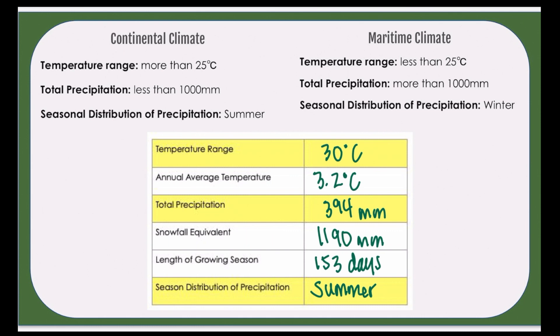We don't know where this location is, so I've put all of our answers on the screen. I've highlighted our temperature range, total precipitation, and seasonal distribution — these three in particular tell us whether it's a continental or maritime climate. If it's continental, the temperature range is more than 25 degrees; if it's maritime, it would be less than 25 degrees. For total precipitation, it has to be less than 1000 millimeters for continental, and more than 1000 millimeters for maritime. Our precipitation is less than 1000, so it falls into continental climate.